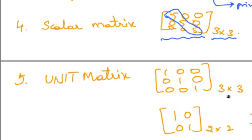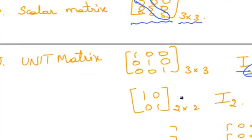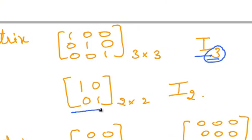A unit matrix — a square matrix in which the principal diagonal elements are all 1 is known as a unit matrix. It is also known as an identity matrix, represented by I₃, where 3 represents the order of the matrix. This 2 by 2 matrix is denoted as I₂.